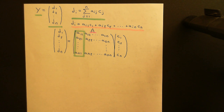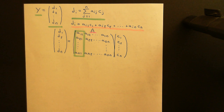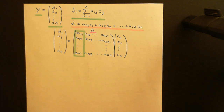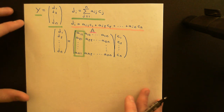That new matrix is still representing the same linear operator, but it's going to have different components because the coordinates we ascribe to each vector in the domain and codomain vector spaces have fundamentally changed. So the matrix, which is swallowing a coordinate and spitting out another coordinate, is going to have to change too.